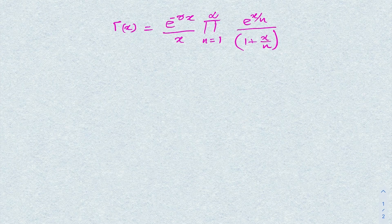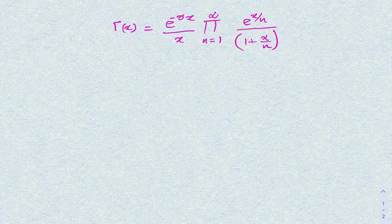Hello everyone, welcome to the mathematics channel. In this video we are going to prove the Weierstrass definition of the gamma function: Γ(x) = e^(−γx) / x · ∏(n=1 to ∞) e^(x/n) / (1 + x/n), where γ is the Euler-Mascheroni constant.